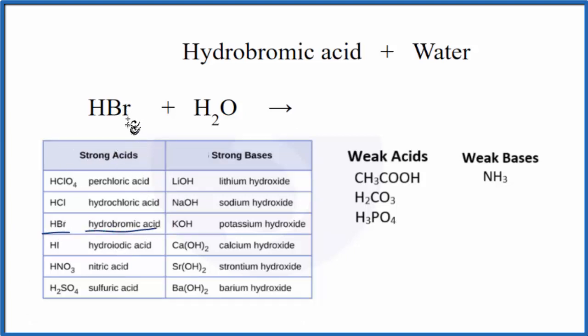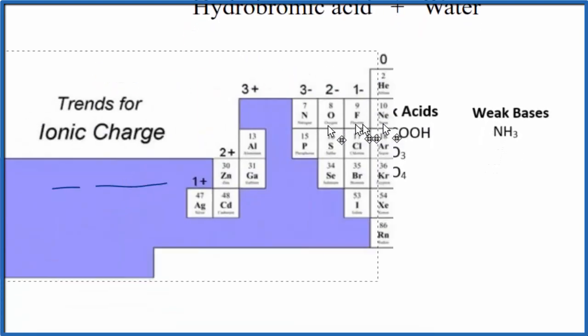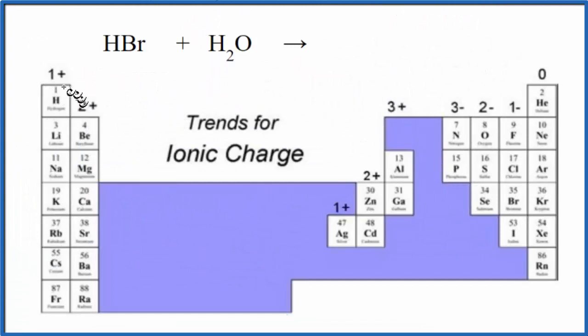Since it's a strong acid, that means it's going to break apart into its ions. It's going to dissociate completely. So we need to look at the charge on the hydrogen and the bromine. If we look at the periodic table, we can see hydrogen here in group one that has a one plus charge, and then bromine over here with the halogens, that's one minus. So we know the charges for the H and the Br in HBr.